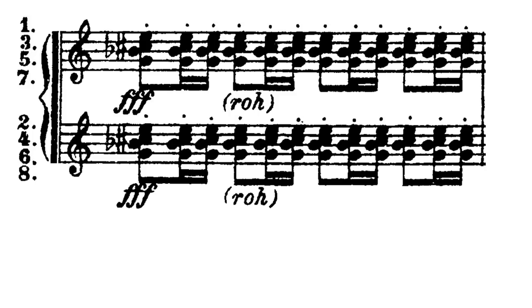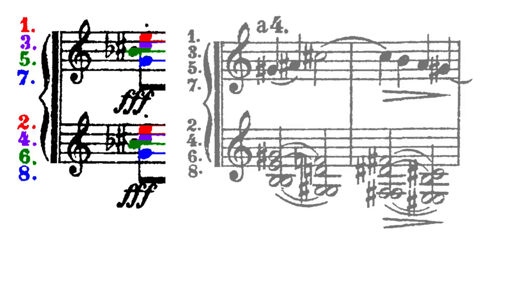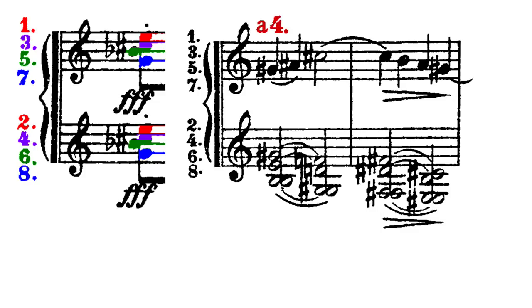In other places, Mahler simply stacks the pitches according to seated pairs, with one and two on top through to seven and eight on the bottom. Or he'll have the odd-numbered players play a unison melody, while the even-numbered players hold down the harmony.